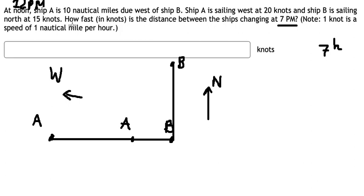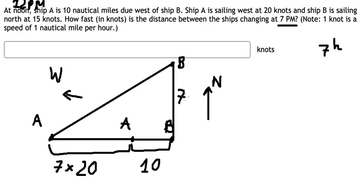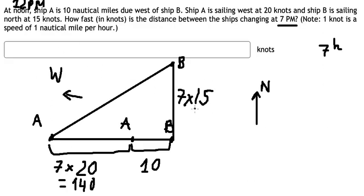Now the question asks how fast is the distance between ship B and ship A changing. We know the initial distance is 10. After seven hours, we can calculate the new locations: we multiply 7 by the velocity of ship A, which is about 20, and ship B, which is about 50. So we get 140 and 105.